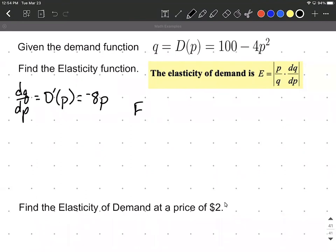So our elasticity of demand function, e of p, can be given by the absolute value of p over, remember q is equal to 100 minus 4p squared, multiplied by dq dp, we calculate it over to the left-hand side. We can say that's 8p. Close off some absolute value.